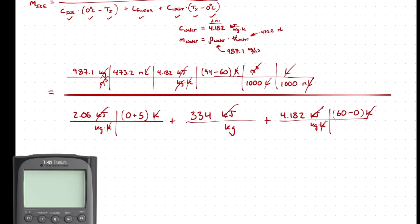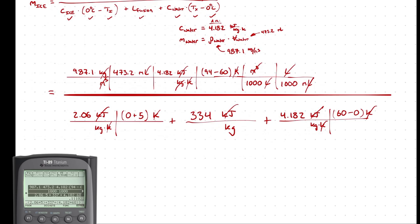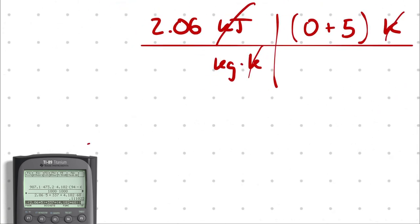Using a calculator: 987.1 times 473.2 times 4.182 times (94 minus 60) divided by (1000 times 1000), all divided by the quantity 2.06 times 5 plus 334 plus 4.182 times 60. We get 0.111022 kilograms as the mass of ice required.